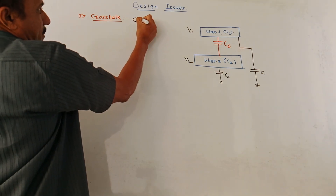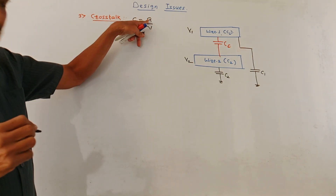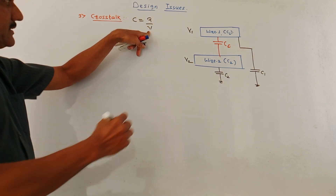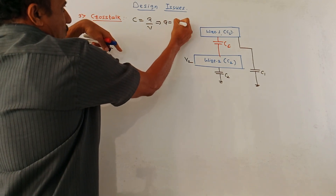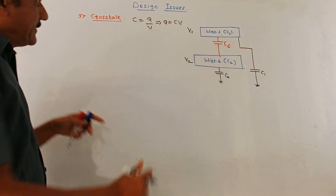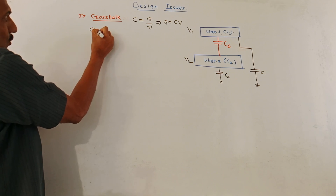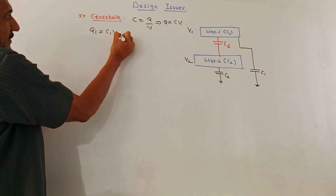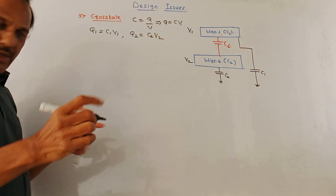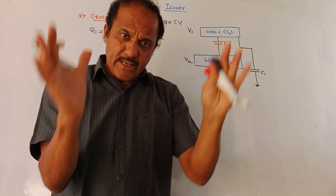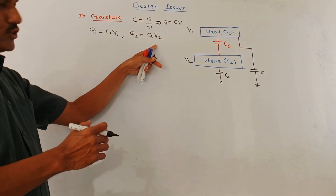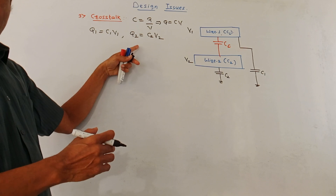Using the basic capacitor equation C = Q/V, we get Q = C × V. For separate isolated capacitors: Q1 = C1·V1 for capacitor C1, and Q2 = C2·V2 for capacitor C2, where V1 and V2 are the voltages related to C1 and C2 respectively, and Q1 and Q2 are the corresponding charges.